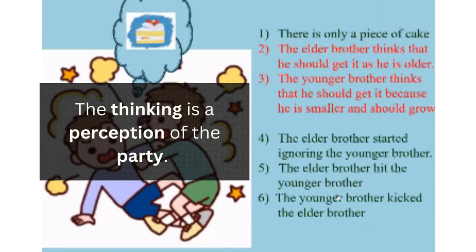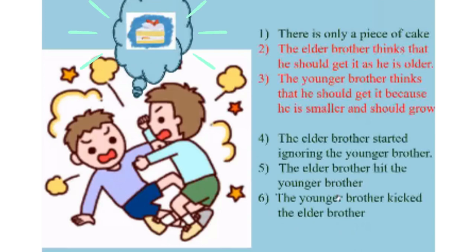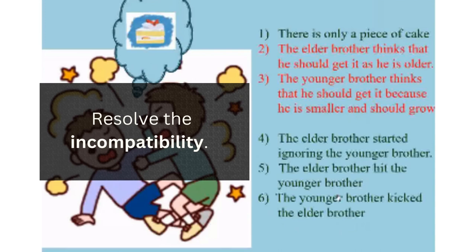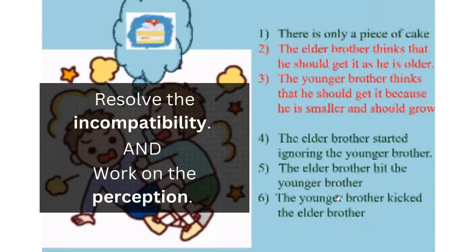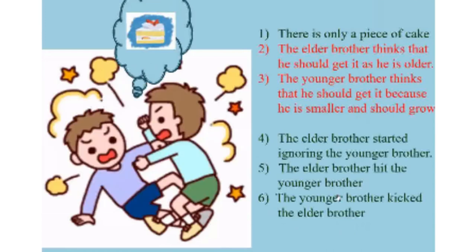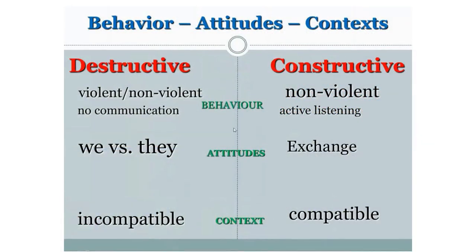In order to resolve this conflict, you have to think about what to do with the cake, because the goals of the parties are to get the cake — you may bring a new cake or divide the cake. But you also have to work on perceptions: why does the elder brother think he should get it just because he is older? So in order to resolve conflict, you must work on all three levels: behavior, attitude, and contradiction.